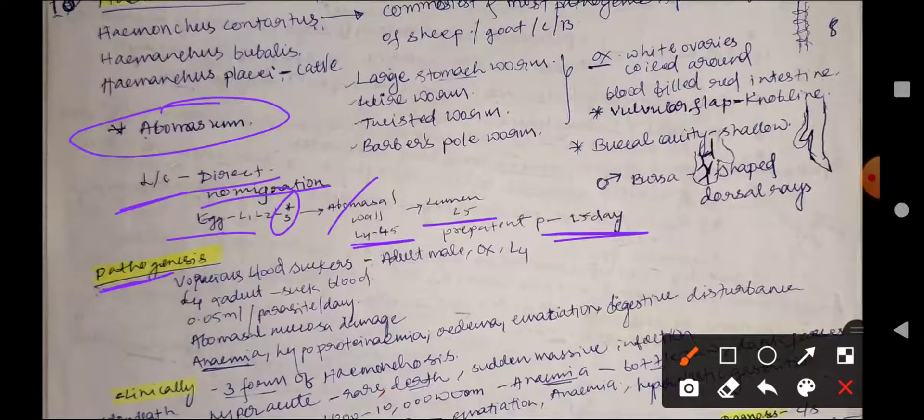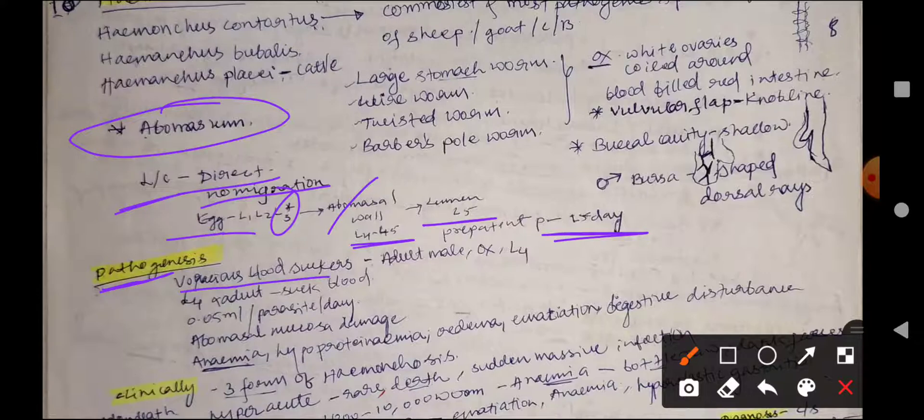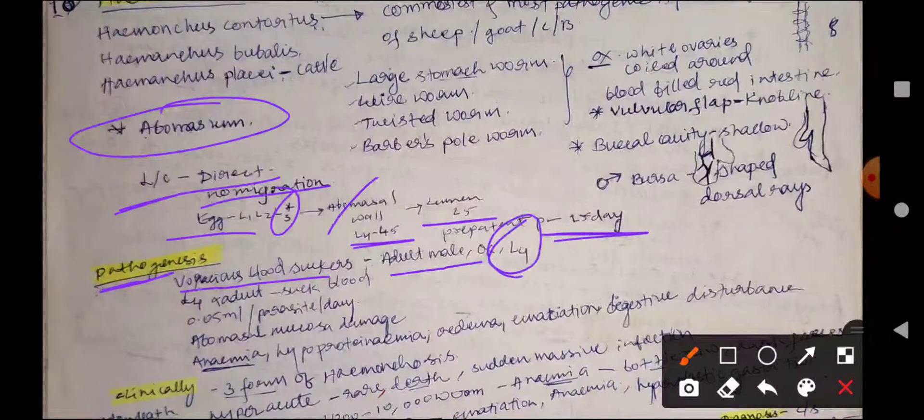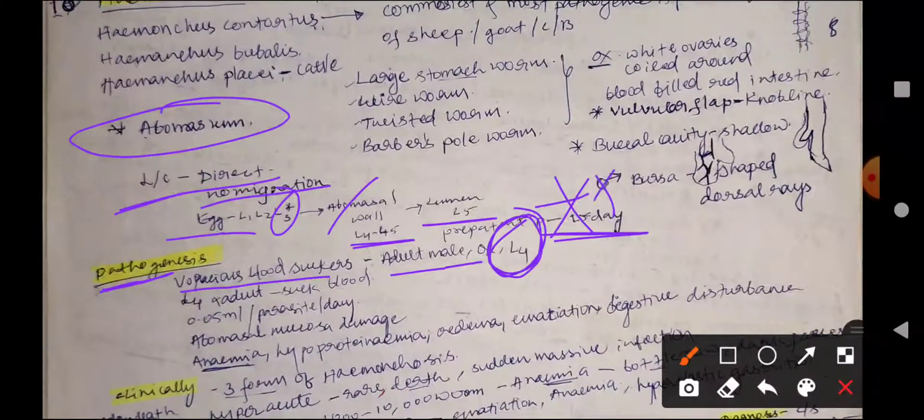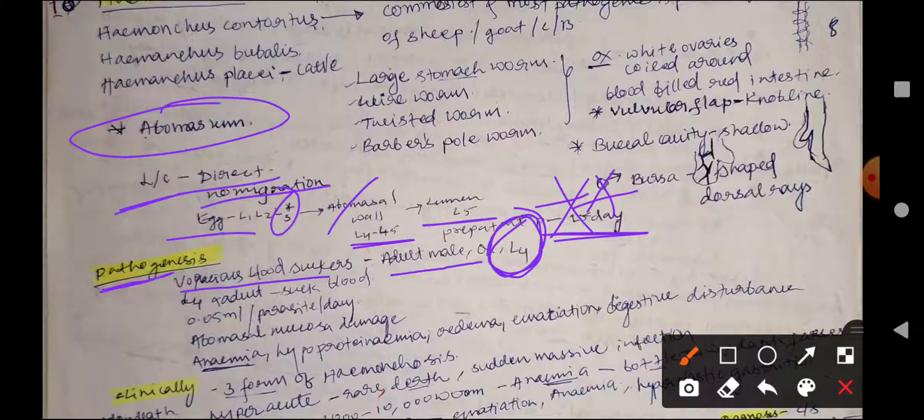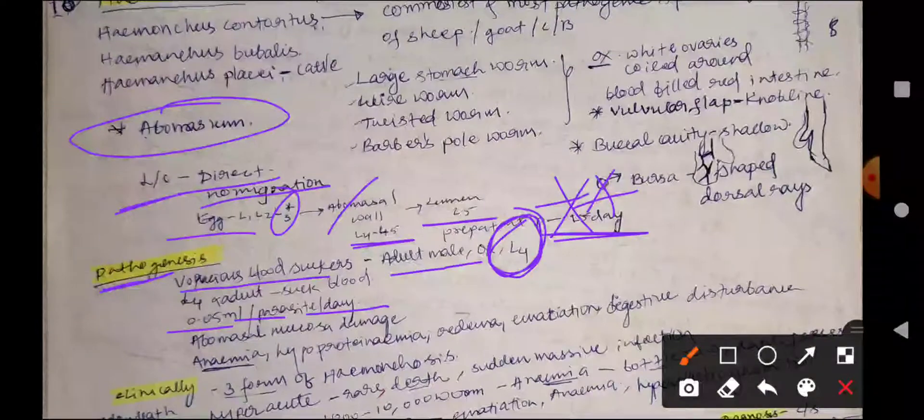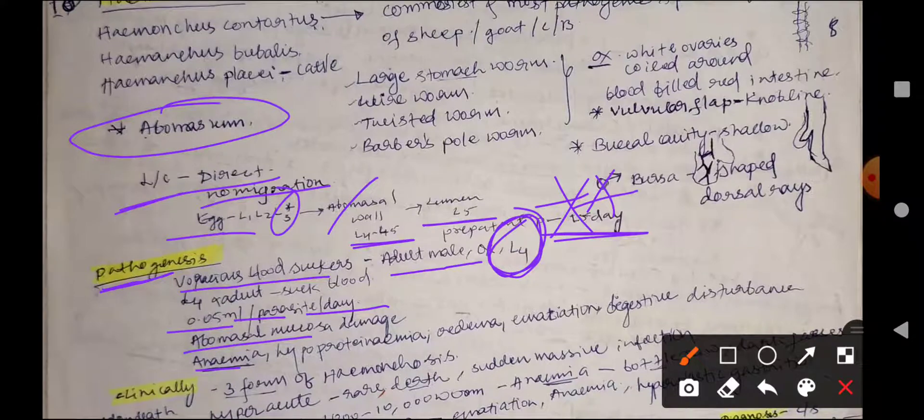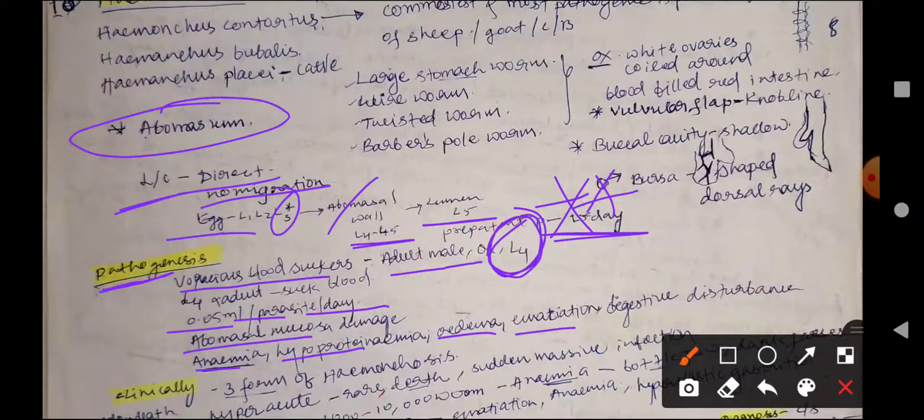The pathogenesis involves voracious blood sucking activity done by adult males, females, and also L4 stage larvae. They can suck around 0.05 ml blood per parasite per day. They damage the abomasum mucosa, which leads to anemia, hypoproteinemia, edema, emaciation, and digestive disturbance.